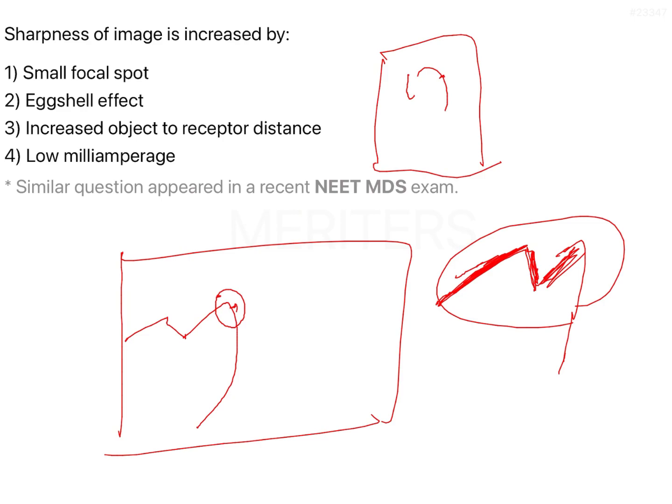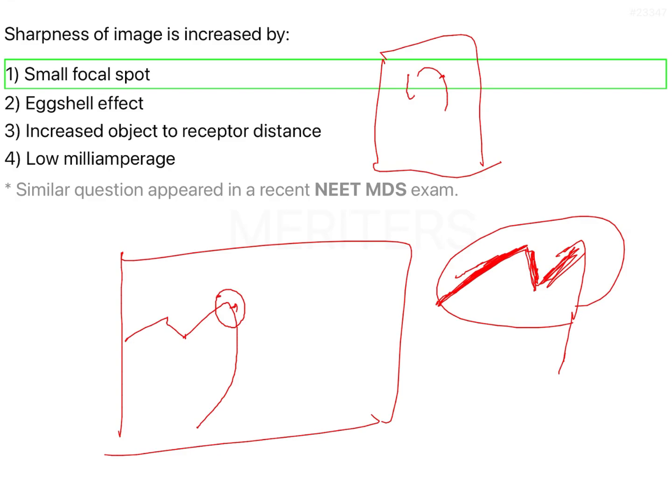Coming to the answer, sharpness of an image is going to be increased by a smaller focal spot. And eggshell effect is when you have x-rays passing through the edge of an object; those rays are called tangential rays.